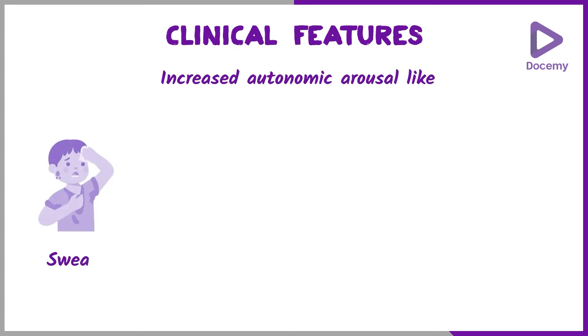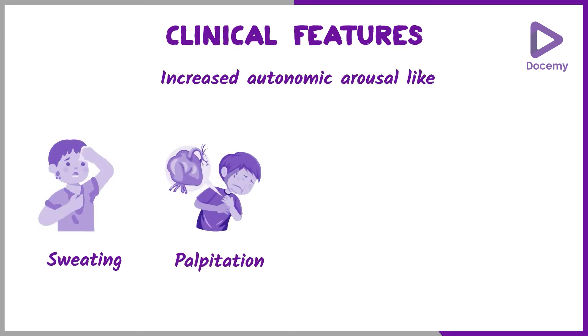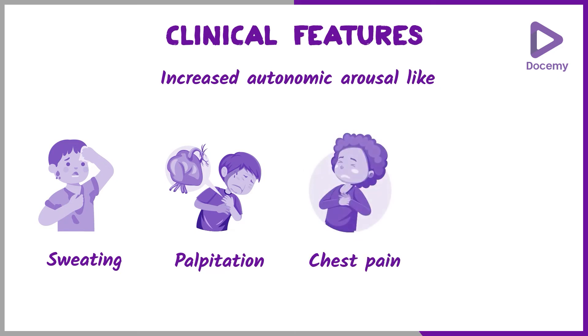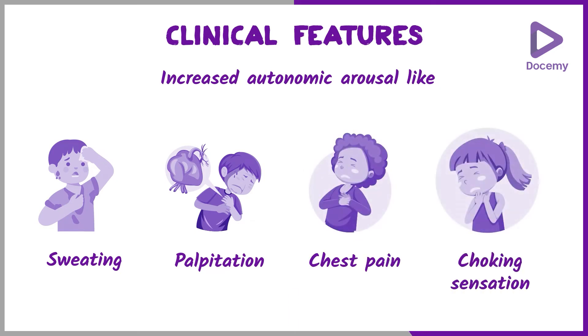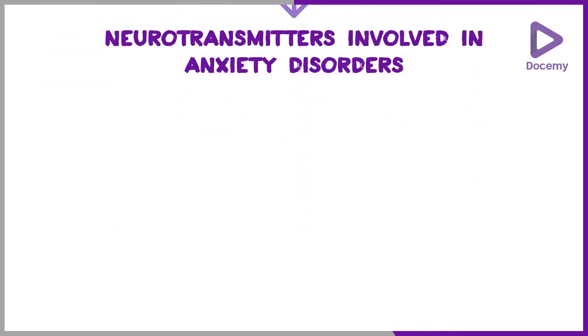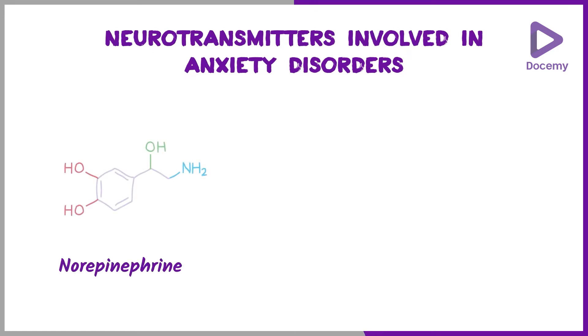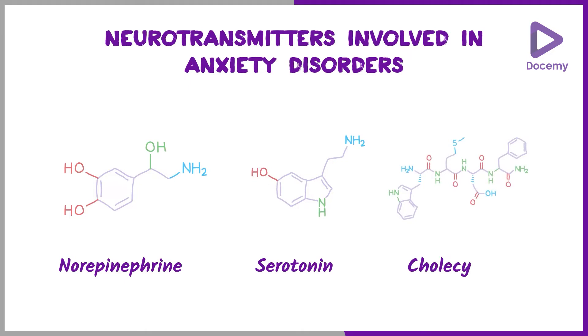It is just increased autonomic arousal like sweating, palpitation, chest pain, and choking sensation. The neurotransmitters involved in anxiety disorders are norepinephrine, serotonin, and the new addition, cholecystokinin. The clinical features I have already told; specific features for certain disorders we will see next.